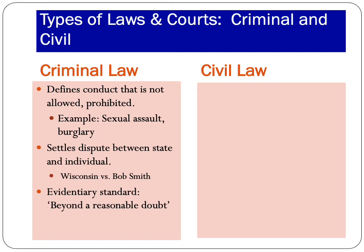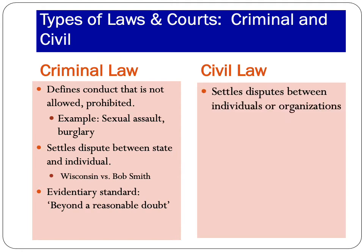The evidentiary standard used in criminal law is higher than in civil law. Because somebody is being found guilty and the penalty can range from probation to incarceration in prison all the way up to the death penalty, we have a high evidentiary standard known as beyond a reasonable doubt. There can't be any reasonable doubt in your mind if you are convicting somebody of a crime.